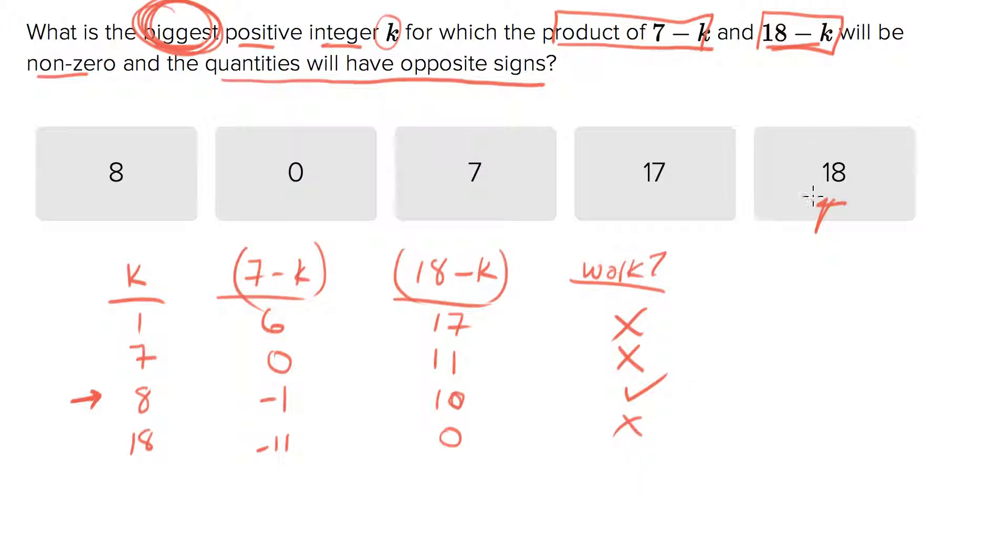Let's scale it back one. Let's go with 17. We'll get negative 10 and 1. That is a positive integer for k, we track both quantities, it's non-zero, the quantities have opposite signs, and it's the biggest k that we can come up with. So this is your correct answer.